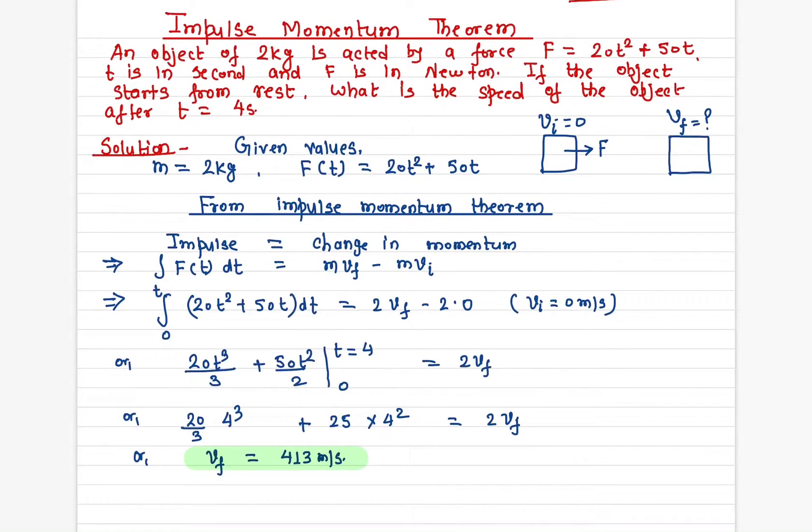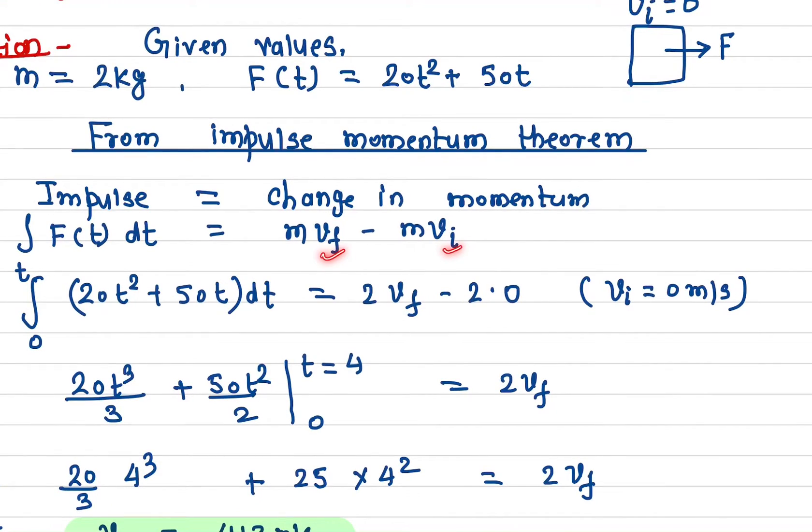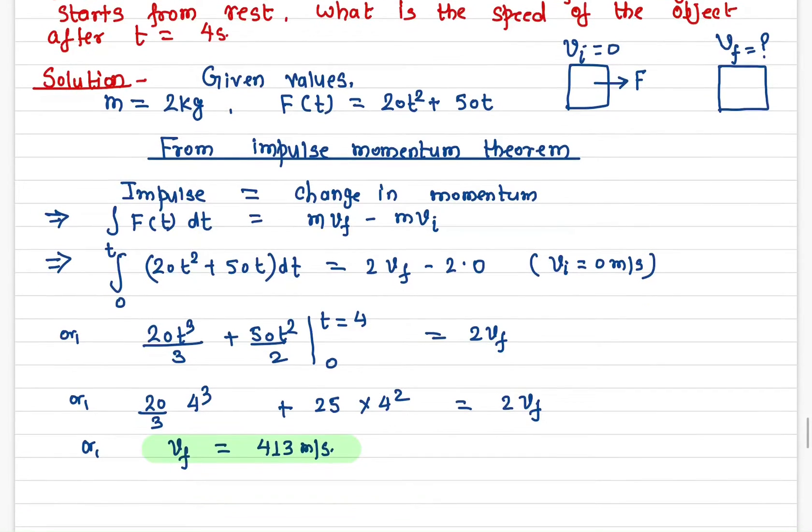The force is given, so I'm writing down the force and dt is the time. Change in momentum is the final momentum minus the initial momentum. F stands for final and i stands for initial. The mass is 2 kg, the velocity we don't know, but the initial velocity is zero, so we have zero here.